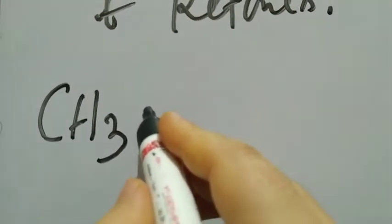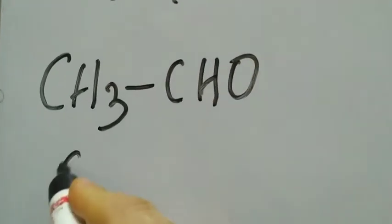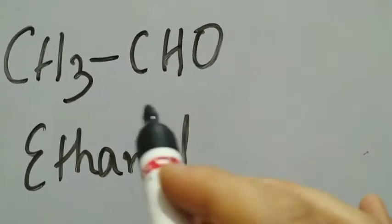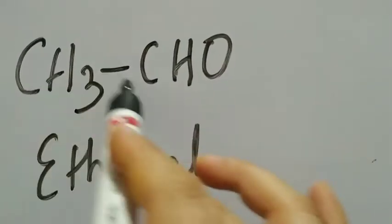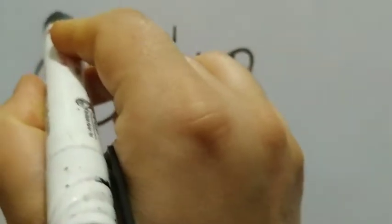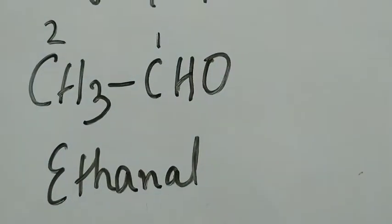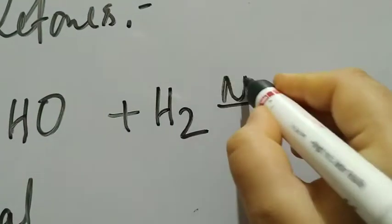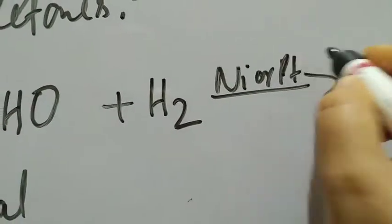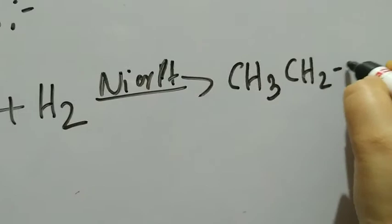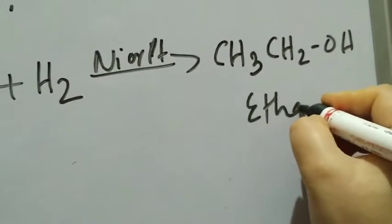Let's do specific reactions. Starting with acetaldehyde: CH₃CHO, whose IUPAC name is ethanal (two carbon atoms; 'al' because CHO is the terminal functional group at carbon one). Carrying out hydrogenation in the presence of nickel or platinum, what we get is CH₃CH₂OH — ethanol. This is a primary alcohol.